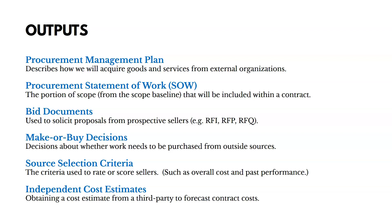There are several outputs of Plan Procurement Management. The Procurement Management Plan documents how we're going to get the goods and services we need from external organizations. Then there's the Procurement Statement of Work — the portion of scope from the scope baseline that will be included within a contract. We determine what we need a procurement for, pull those items from the scope baseline, and they go into our Procurement Statement of Work. Then there are Bid Documents, used to provide information to suppliers. These include a Request for Information (RFI), a Request for Proposal (RFP), or a Request for Quotation (RFQ) — documents sent to prospective sellers to get their feedback on products they can provide and at what price.